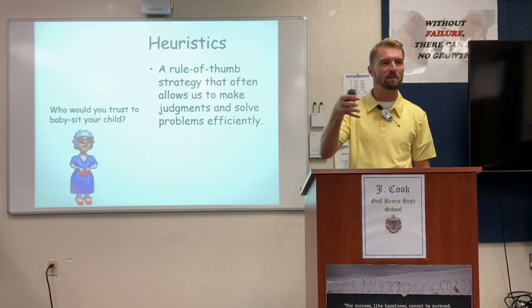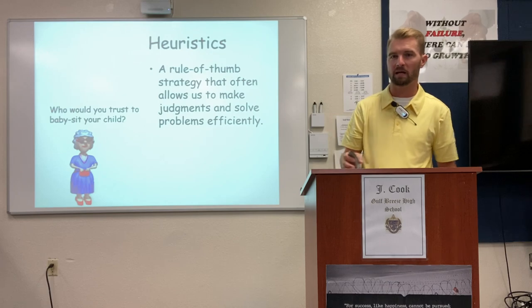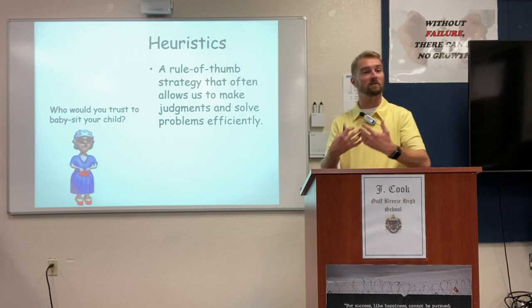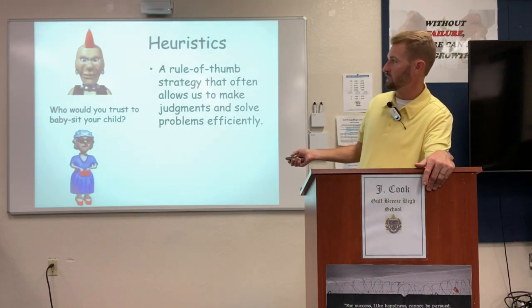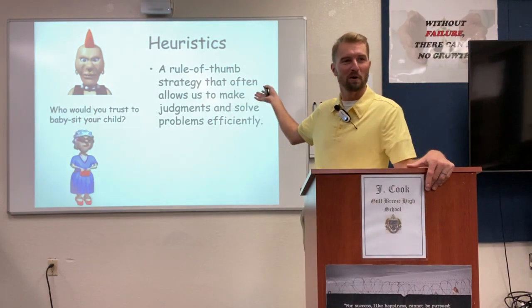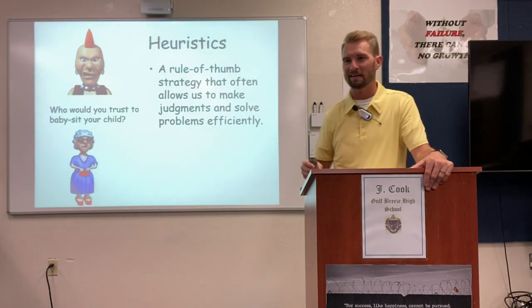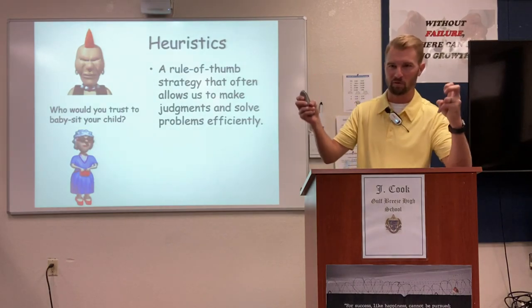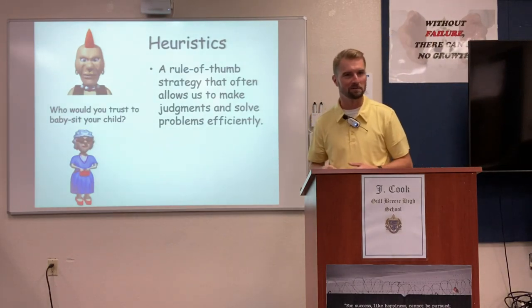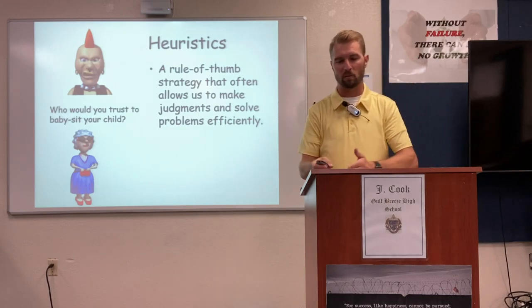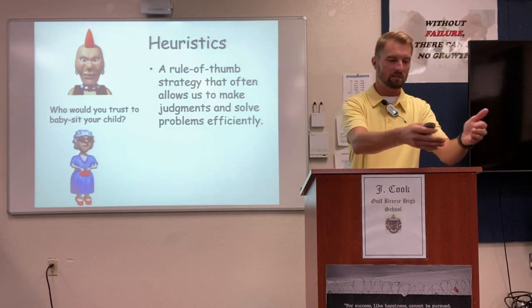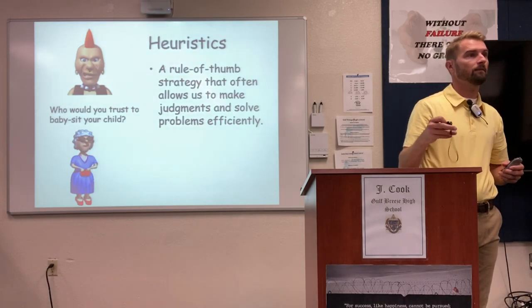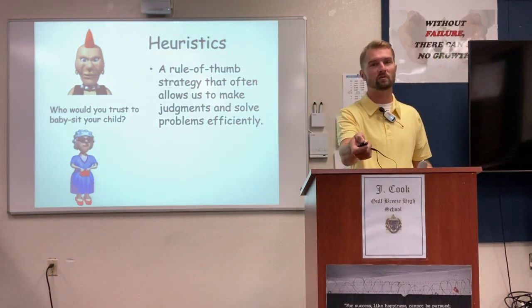For example: do you want this lady to babysit your kid or this guy? He might be a perfectly acceptable human being — a dad, rescues puppies, super nice guy. We're not supposed to judge people, but we do. Tomorrow we'll look at the two different categories of heuristics: representative heuristics versus availability heuristics.